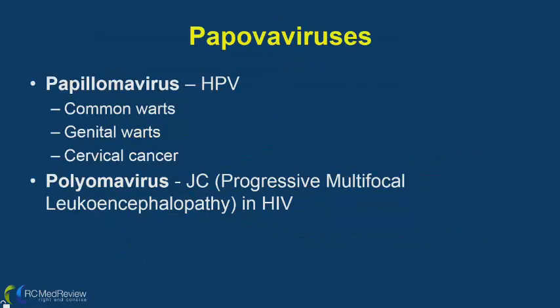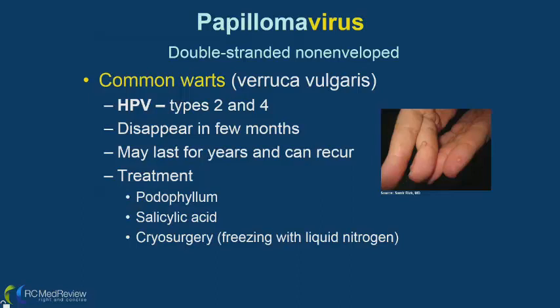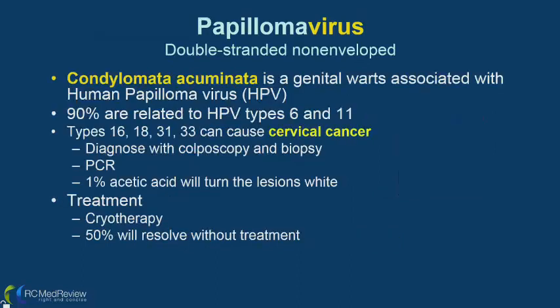Under papovaviruses, we have papillomavirus and polyomavirus. Papillomavirus can cause common warts (verruca vulgaris), genital warts, or cervical cancer. Lower strains like 2 and 4 cause common warts. These appear within months, may last years, and can recur. Treatments include podophyllum, acetic acid with salicylate, or cryosurgery with liquid nitrogen.